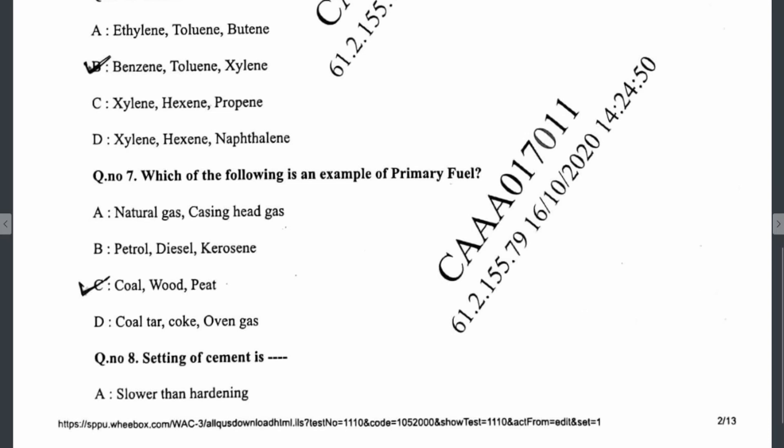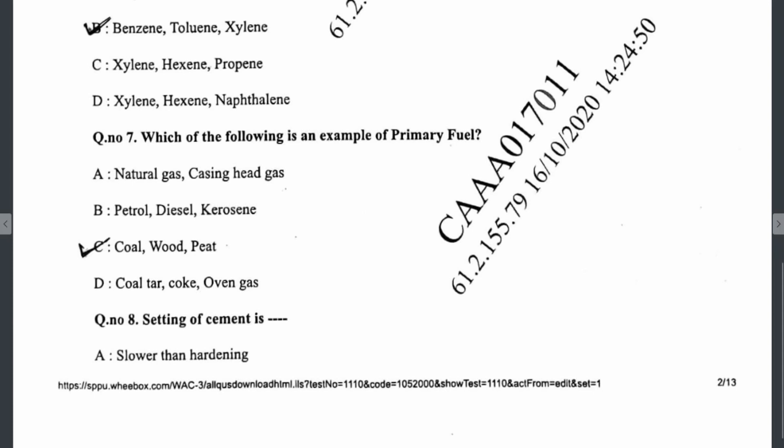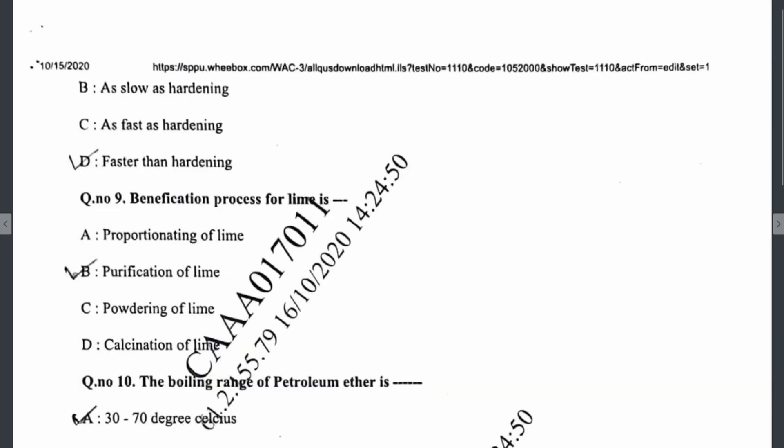Question seven: examples of primary fuels are coal, wood, and peat. Question eight: the setting of cement is faster than the hardening — first setting takes place, and then hardening is the longer process that continues for a long period of time.